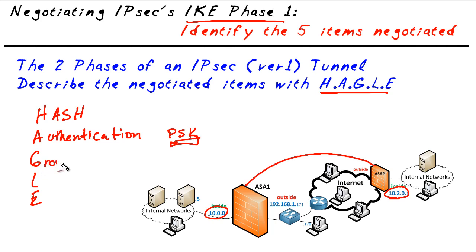The G is for group, which represents the Diffie-Hellman group. Diffie-Hellman was named after the two gentlemen who wrote the protocol, and what it allows ASA1 and ASA2 to do is generate secret keys that they can use with each other to encrypt and decrypt data respectively.